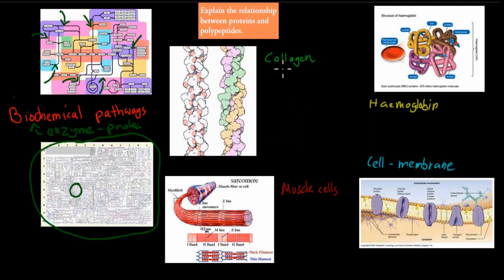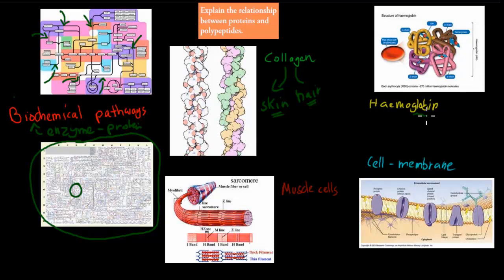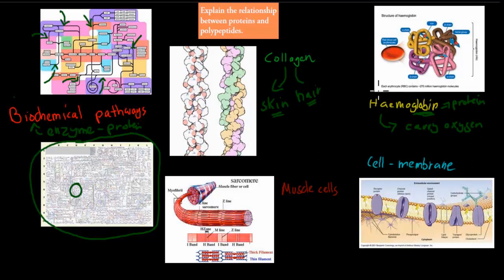Collagen is also an example of a protein — it's a protein that we can find in skin and in hair. So if we can't make this collagen protein, we wouldn't be able to have skin or hair. Now hemoglobin is another protein — the globin part stands for protein. Remember, hemoglobin helped us carry oxygen. So without hemoglobin, we wouldn't be able to carry oxygen. If we couldn't produce hemoglobin, then we wouldn't be able to carry oxygen, so we have to have some way to actually produce it.